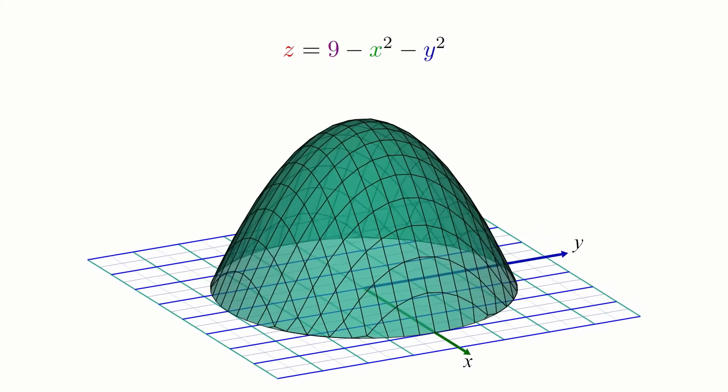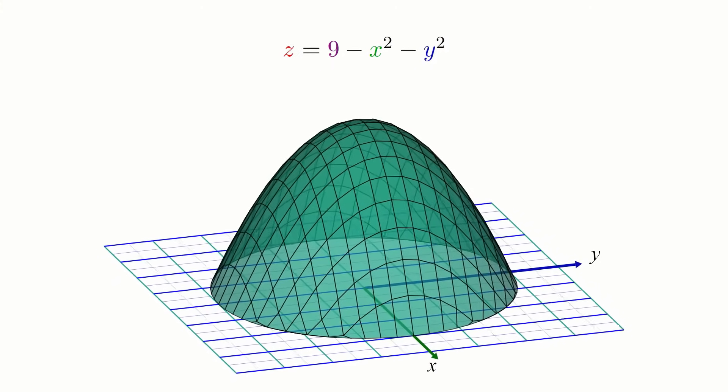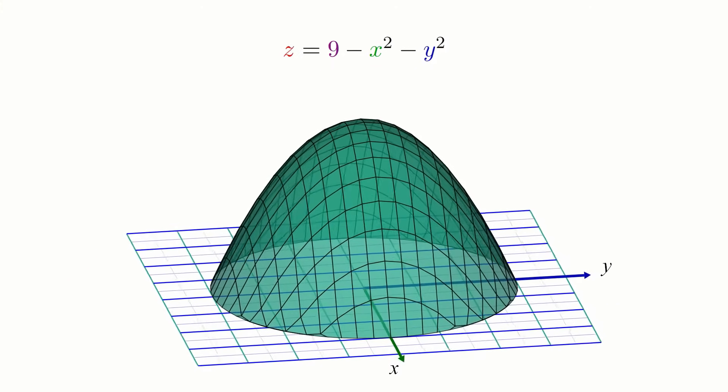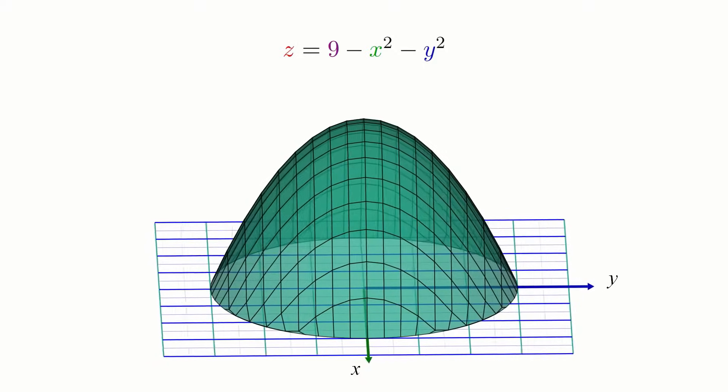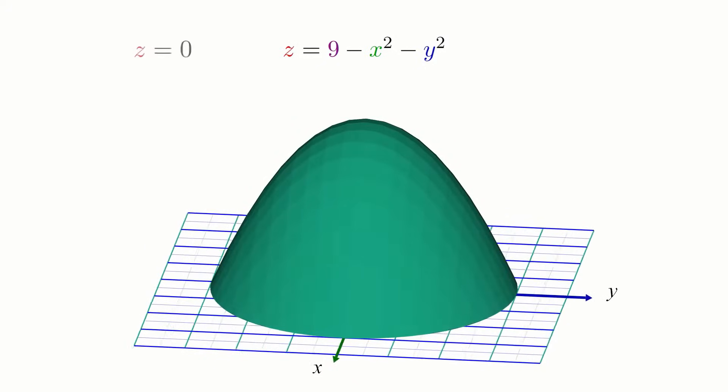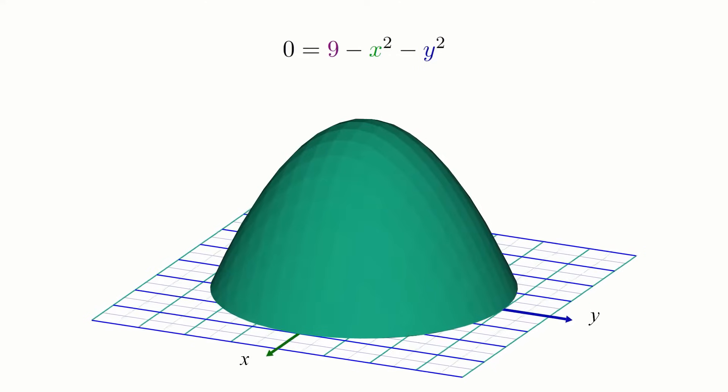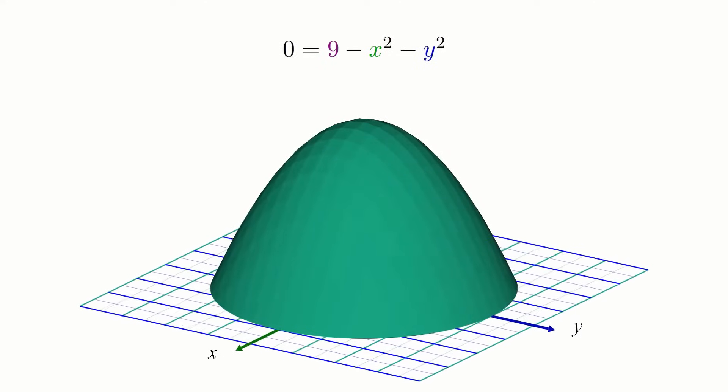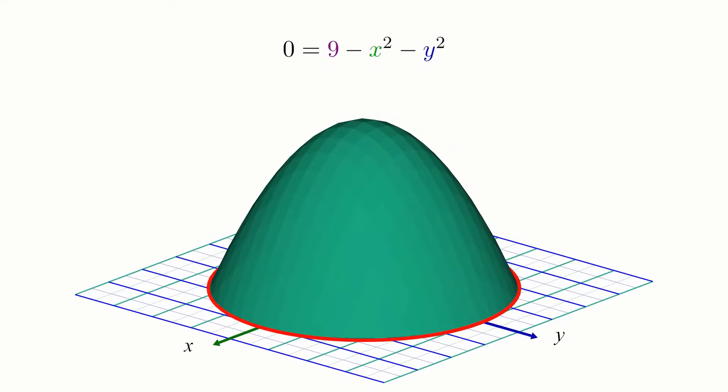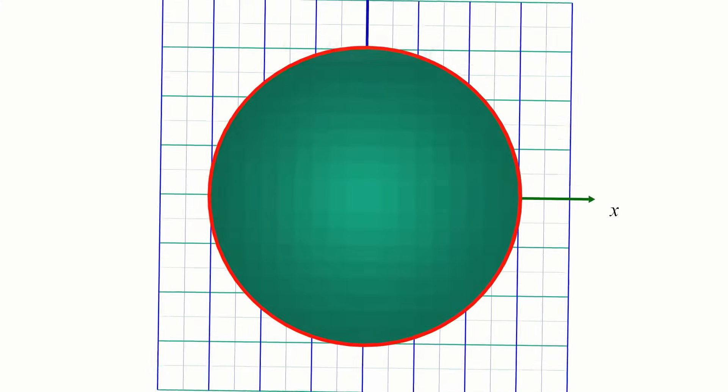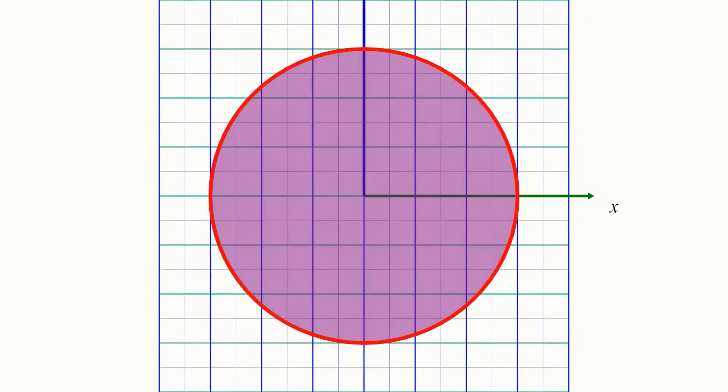We can find the volume under a surface in the xy plane by taking a double integral over some region of the xy plane. Since the xy plane is the plane where z equals 0, if we set z equal to 0 in our surface equation, we find that the volume we're interested in is inside the circle of radius 3 centered at the origin, so we will need to take a double integral over this disk.